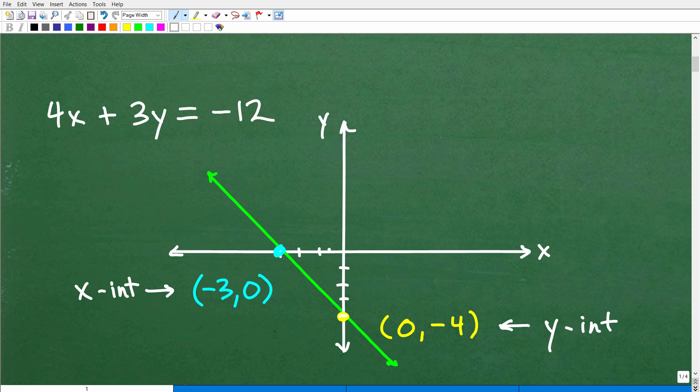Here is a nice little xy plane. By the way, we're just looking for a sketch. It doesn't have to be a perfect graph. Here are the intercepts. Our y-intercept, this is the y-axis right here, is located at 0, negative 4. And our x-intercept right here is located at negative 3, 0.